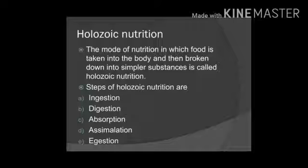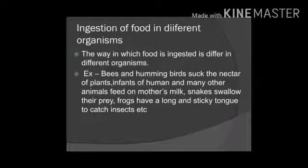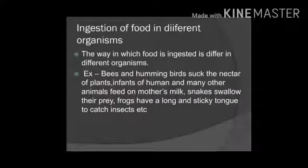Many animals including humans show holozoic nutrition. The process of holozoic nutrition involves five steps: ingestion, digestion, absorption, assimilation, and egestion. Ingestion is the process by which food is taken into the body. Whatever food an animal is taking in, that process is called ingestion.